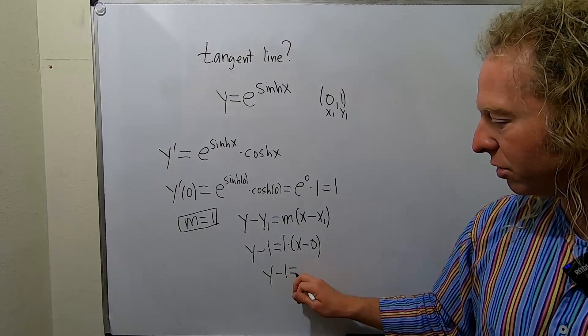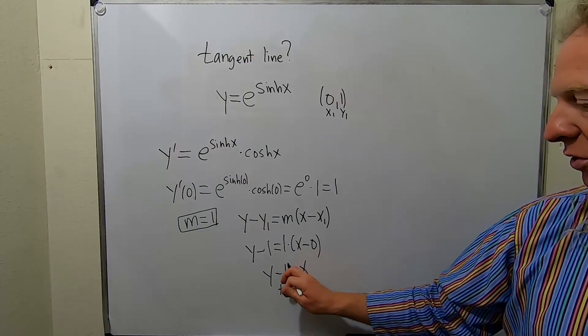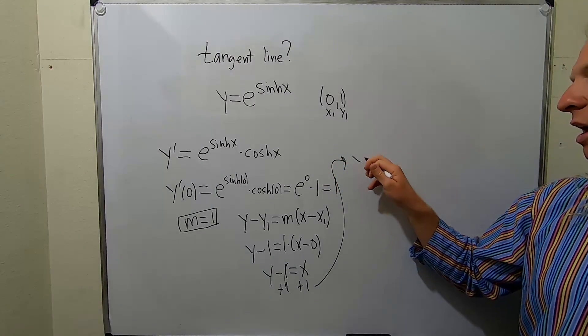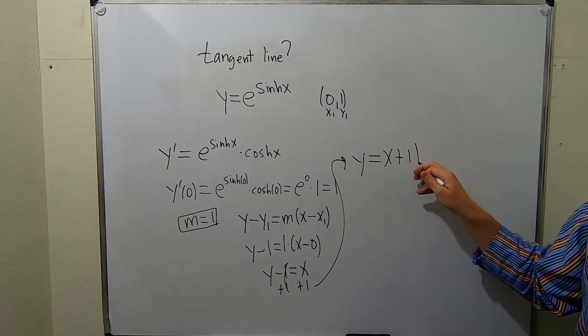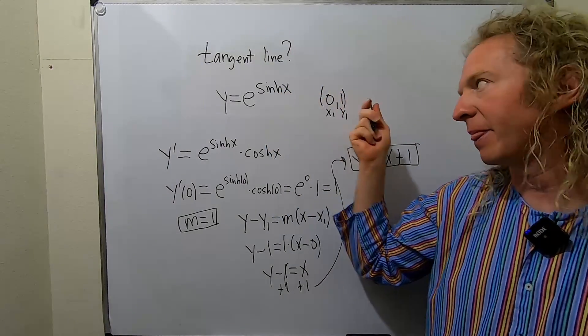So y - 1 = x. To finish, we just add 1 to both sides. And so we end up with y = x + 1. And that is the equation of the tangent line to the graph of this function at this point.